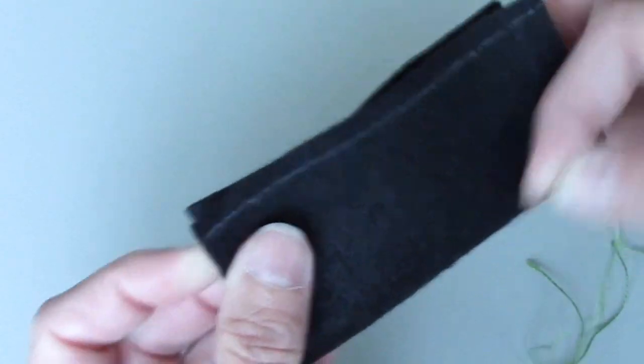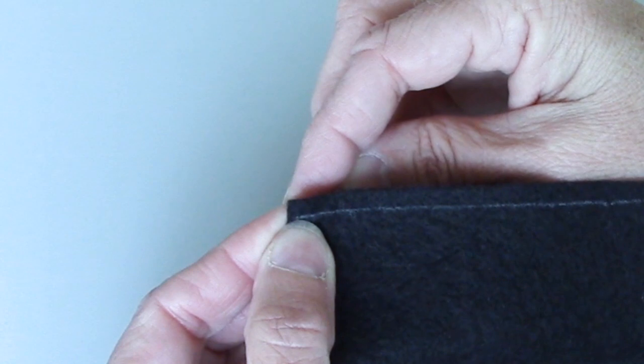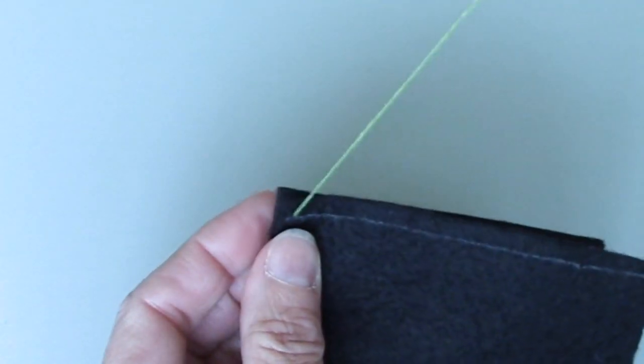I have a line marked, and I do have two pieces of fabric here I'm sewing together. I'm going to start by bringing my needle out on the line. So I actually put my knot between the two layers.